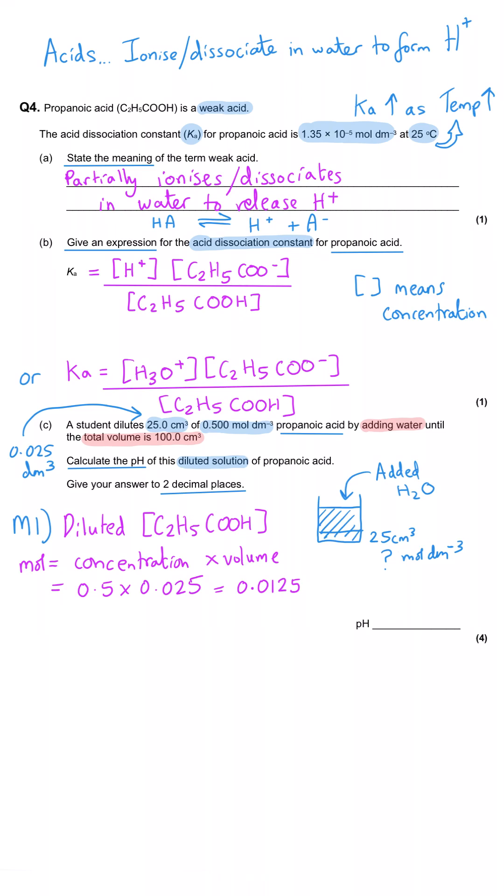and that gets us 0.0125 moles of propanoic acid at the beginning. When we add water to it, that acid is still going to be there, so the diluted moles is still going to be the same. But now it's spread over a bigger volume, 100 cm3, so 0.1 dm3, so concentration is moles divided by volume.